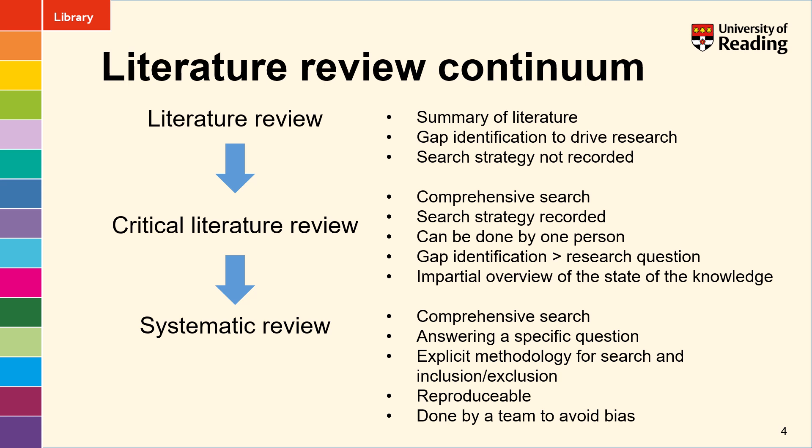The next level of literature review would be a critical literature review. This would involve a comprehensive search and a basic search strategy would be recorded in the methods section. This sort of study can be done by one person and what it's used for is to provide an impartial overview of the current state of the knowledge, and it can be used to identify gaps and propose future areas for research.